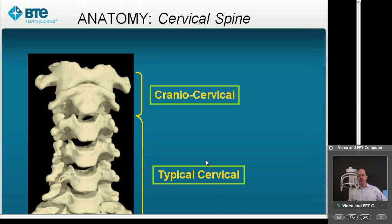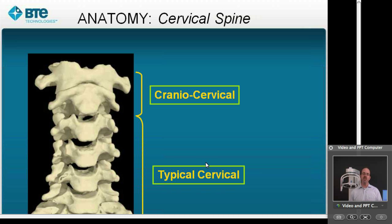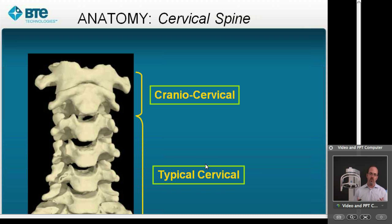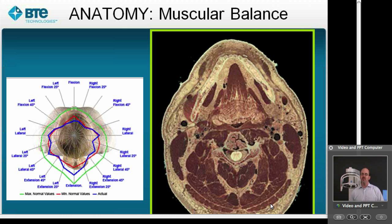As we look at the next step, it's important to understand the terminology used for movement patterns and muscle groups. We refer to the cervical spine at two different levels: the typical cervical, which is the lower cervical spine, and the cranial cervical. The cranial cervical is where we get the majority of our range of motion and flexion, and also where the greatest stability concern lies. Looking at the radar graph, the strength patterns of the neck tend to be highest in the posterior aspect of the spine, matched by the sheer amount of muscle mass occurring posteriorly.